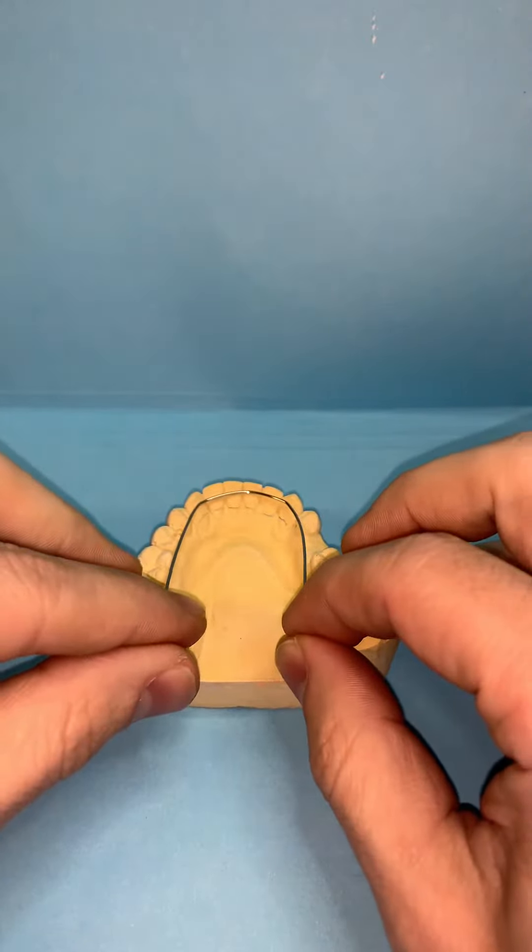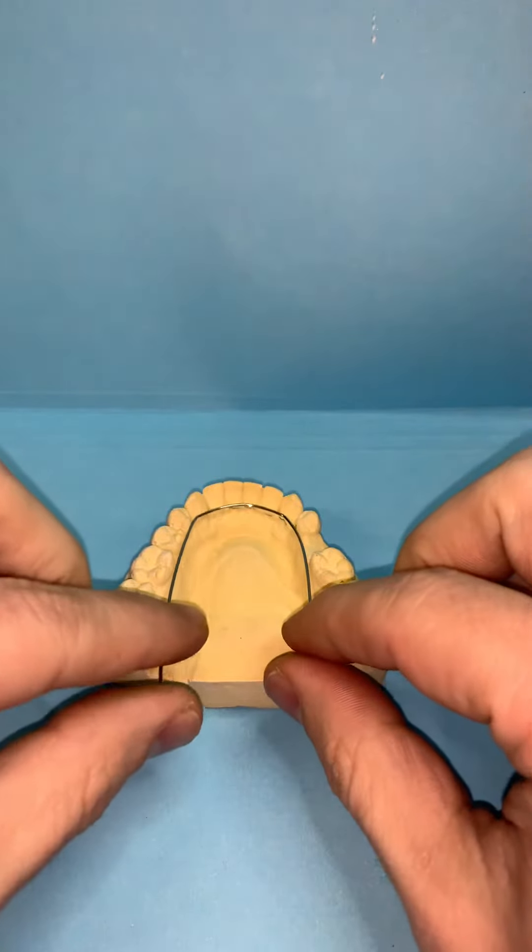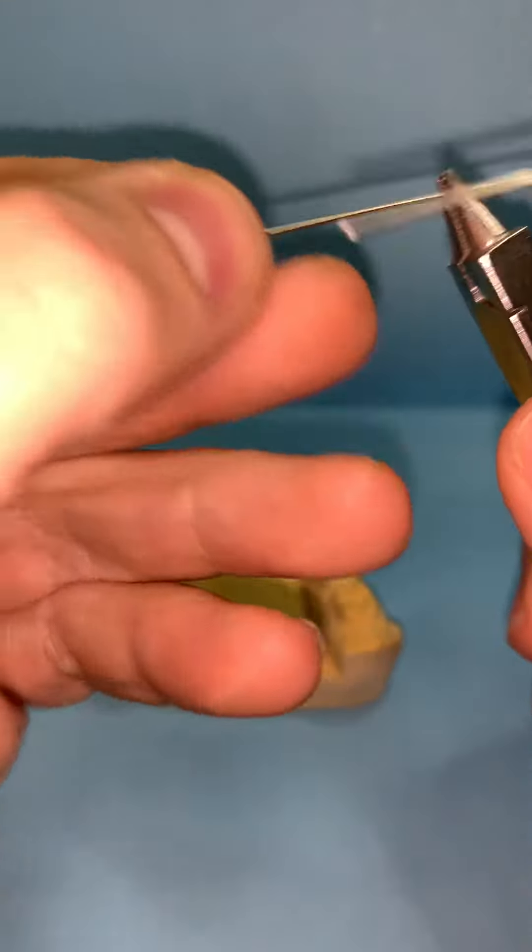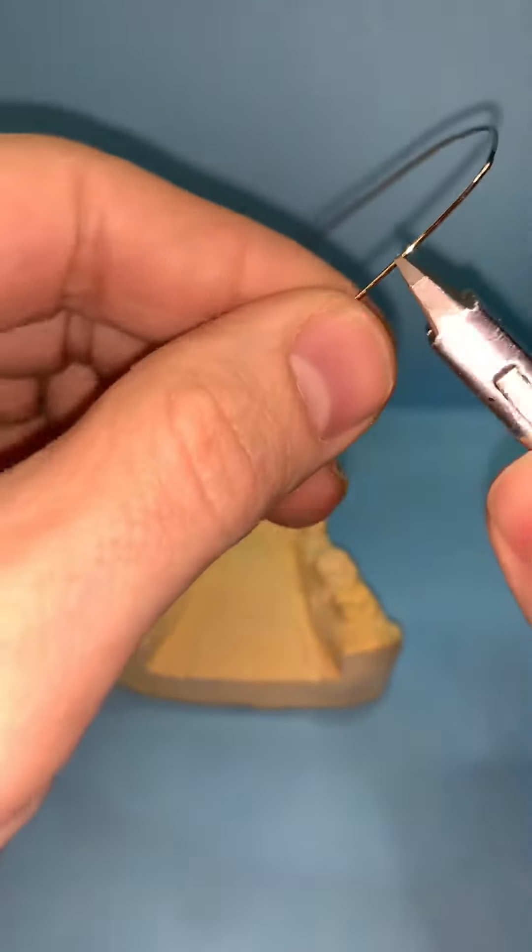If it was higher up, any pressure would make these teeth tilt forward. So as you bend back, you just want to contour it along the posterior teeth. Make sure it's touching the posterior teeth.